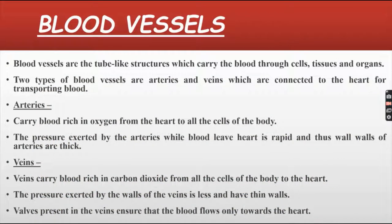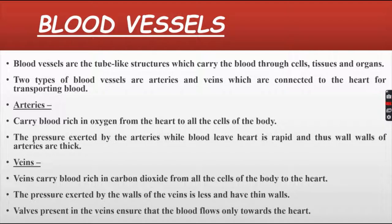Now let's see what blood vessels mean. Blood vessels are tubular structures which carry the blood through cells, tissues and organs. Two types of blood vessels are arteries and veins, which are connected to the heart for transporting blood.